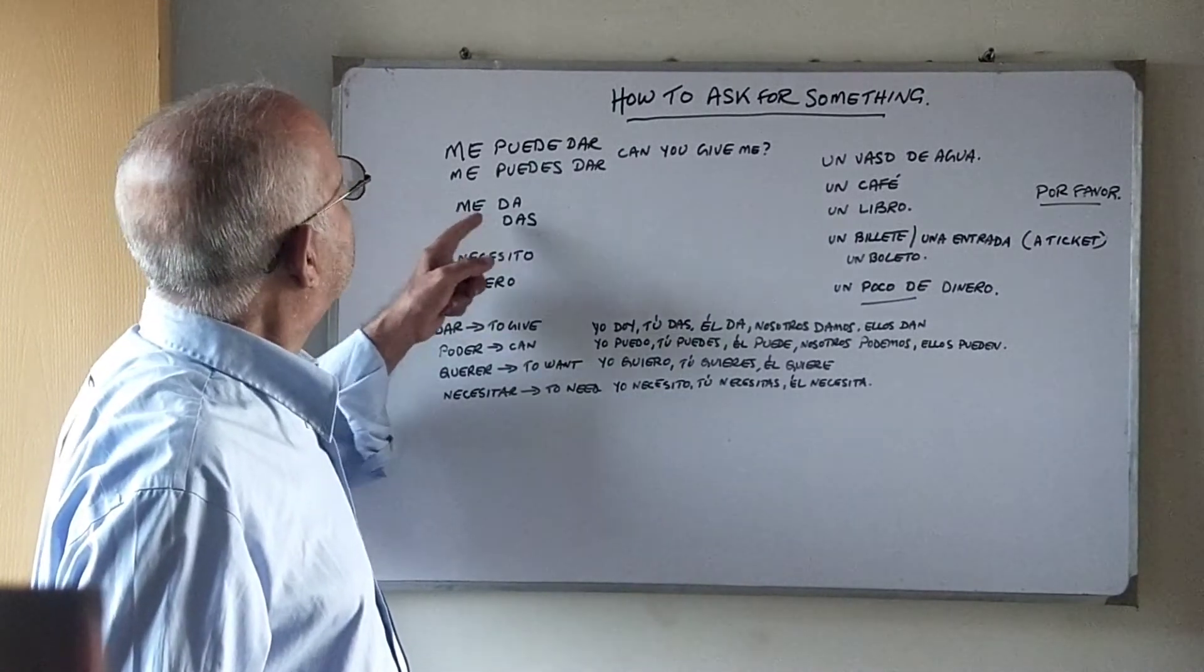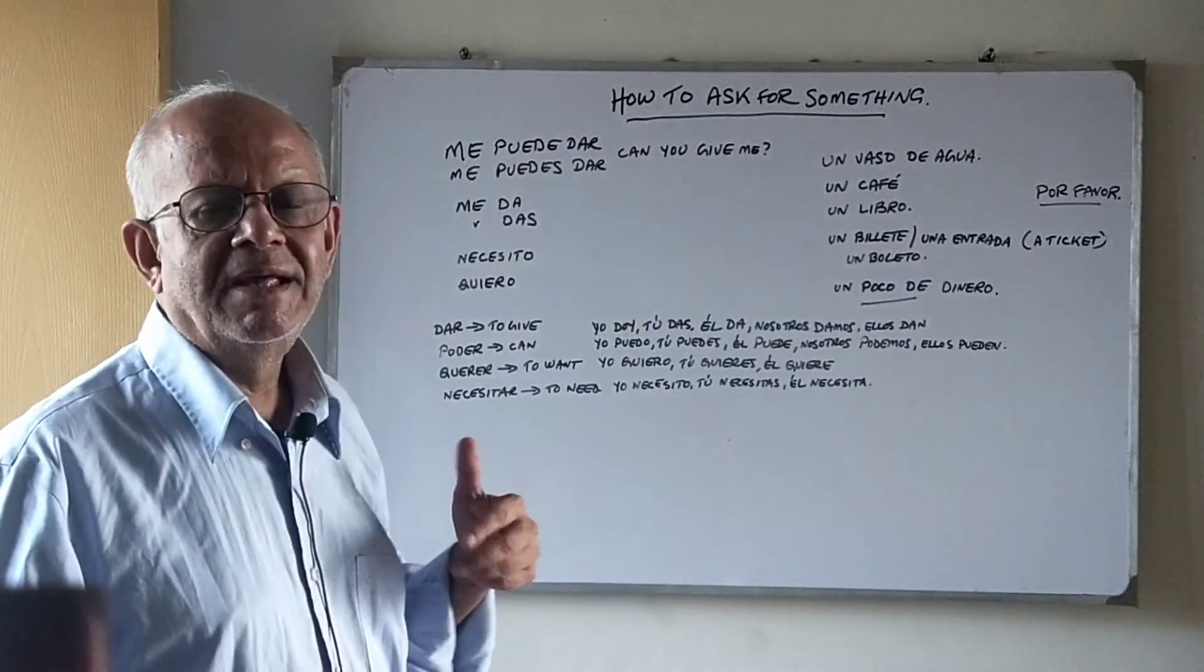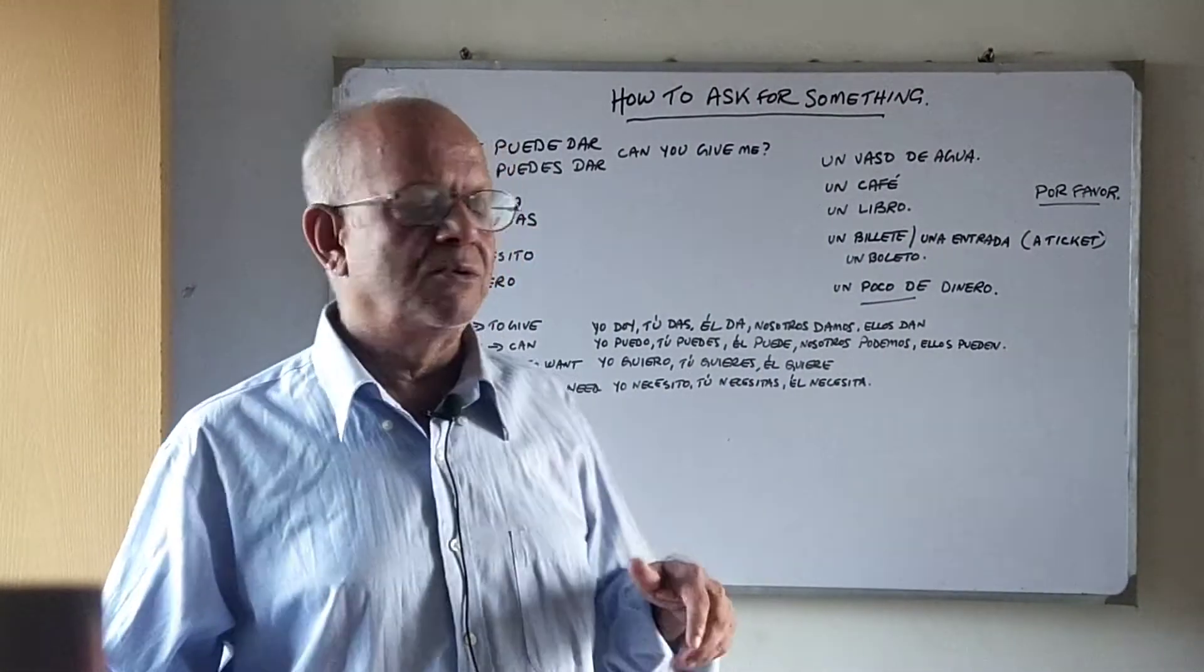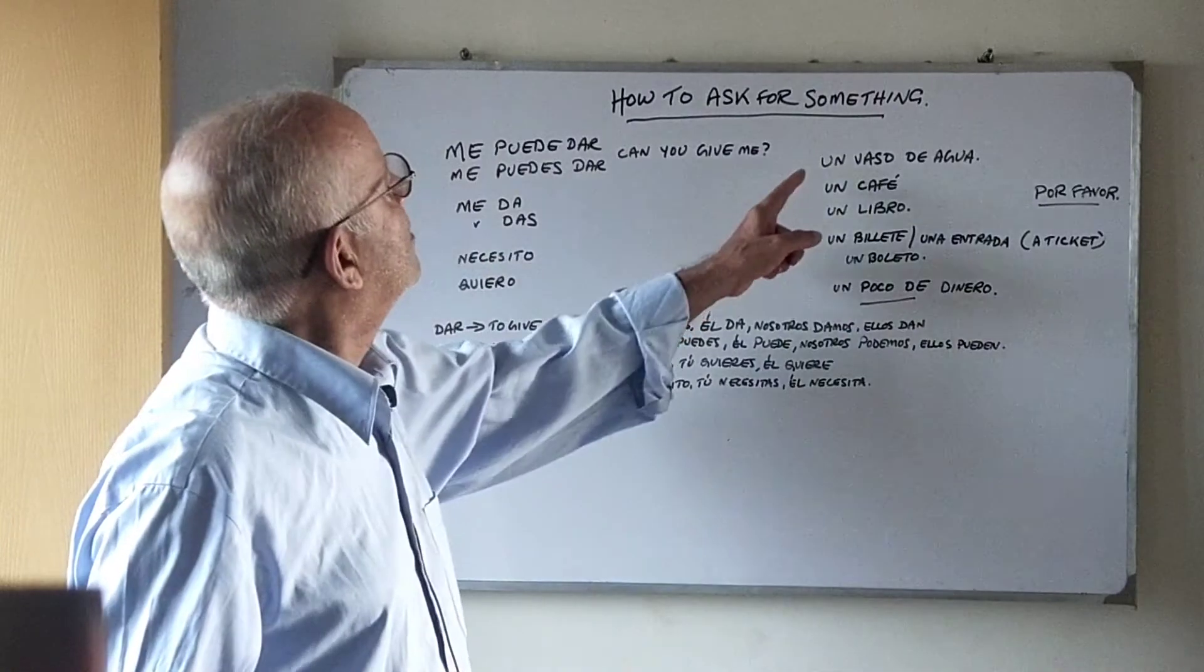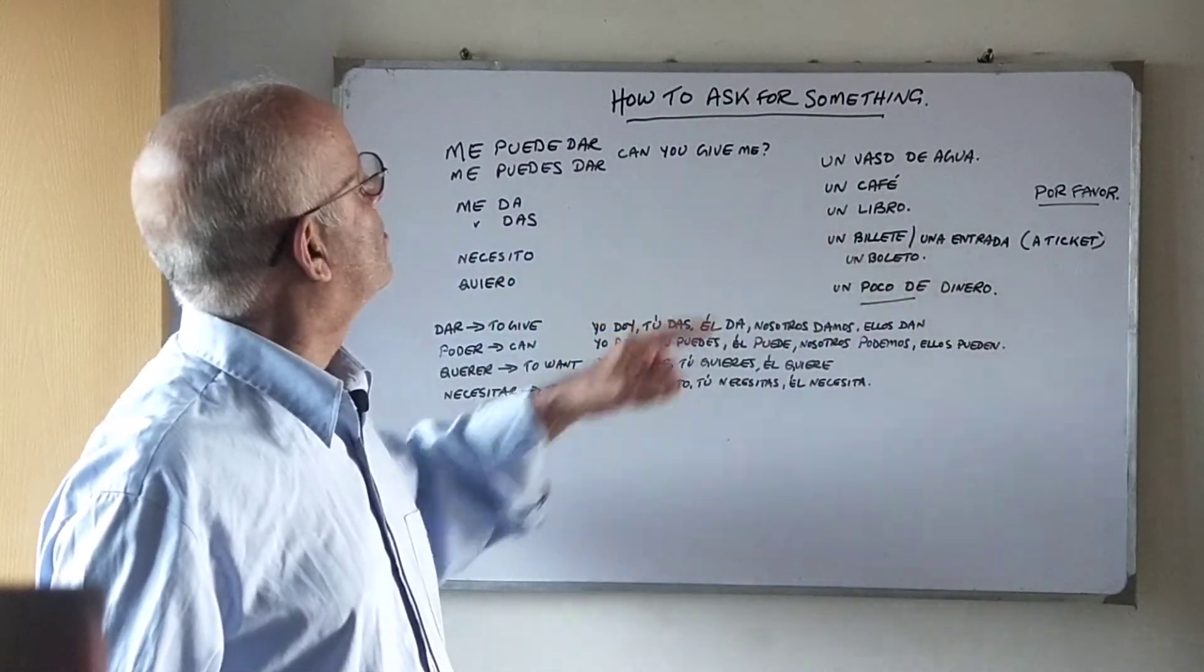Me da or you can put the me after the da. Da me, you can even say da me, give me. So, me da un vaso de agua, me da un café, me da un libro and so on.